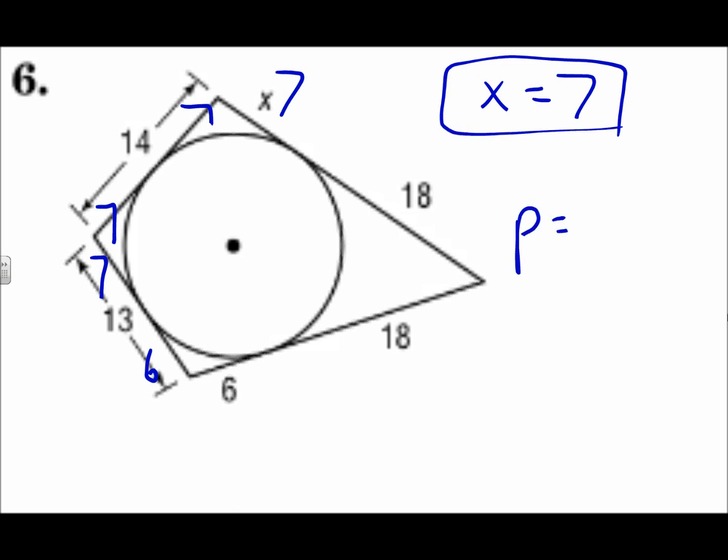For the perimeter, add up all the way around. The two 18s, the two 6s, the two 7s, and the other two 7s. And they add up to 76. So, watch for your segment addition. Remember, each corner, they're going to be the same. 7 and 7, 7 and 7, 6 and 6, 18 and 18.